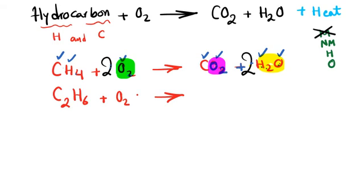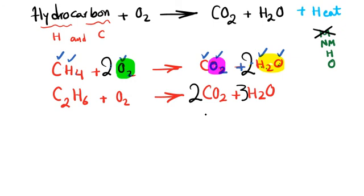Another example: C2H6 plus O2 — another hydrocarbon combustion reaction. Products are CO2 and H2O. Start with carbon: two carbons, so multiply CO2 by two. Then hydrogen: six hydrogens, so multiply H2O by three.